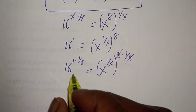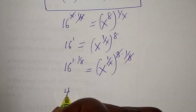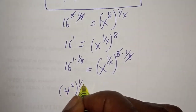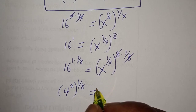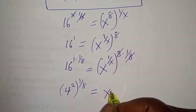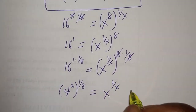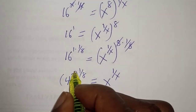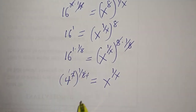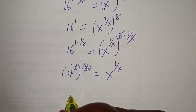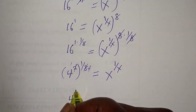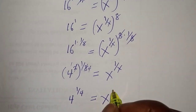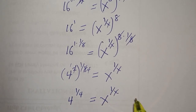This will cancel this. So this can be written as 4 squared to the power of 1 over 8, is equal to s raised to power 1 over s. Now, 2 here, 2 here — 4. We have 4 raised to power 1 over 4 is equal to s raised to power 1 over s.